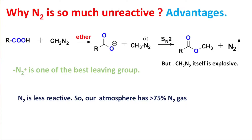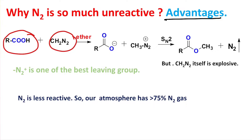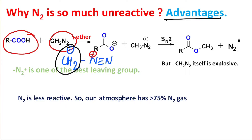What advantage do we get from this? When you react a carboxylic acid with diazomethane, it protonates the diazomethane. Diazomethane has the canonical form CH₂⁻–N≡N⁺. This negative charge helps it abstract the proton from the polar O-H group, so diazomethane acts as a base, producing a carboxylate anion and CH₃N₂⁺.